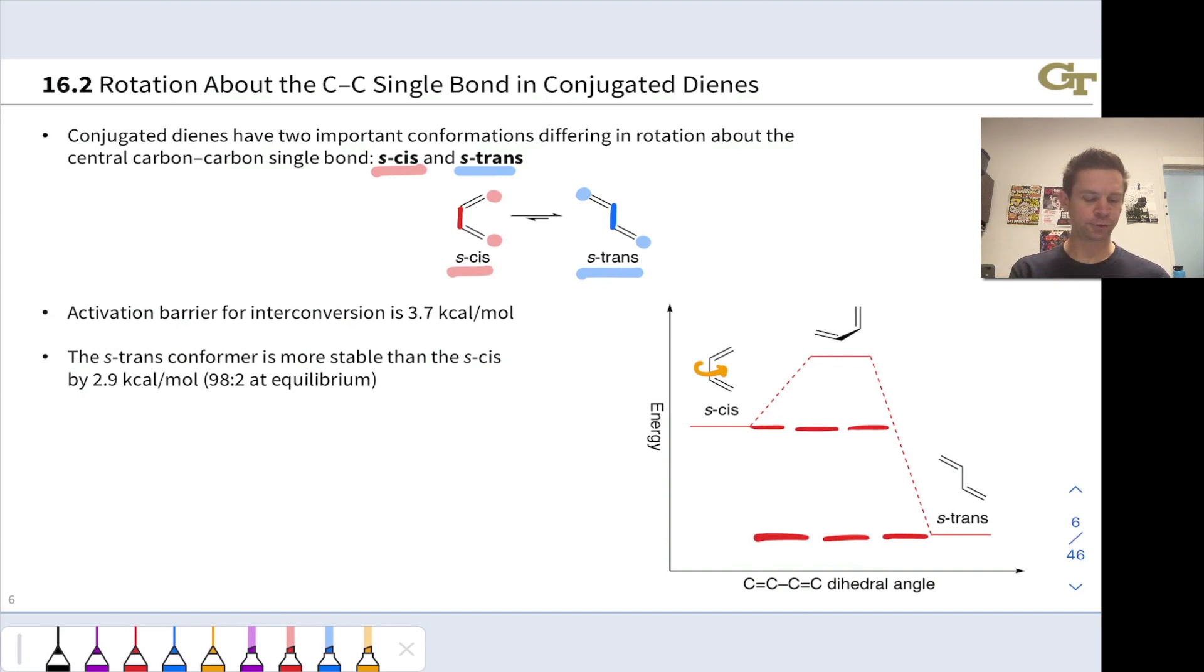If we measure that, it comes out to 2.9 kilocalories per mole. If we do the math on free energy and equilibrium constants, that's a ratio of about 98 to 2 at equilibrium—98% S-trans conformer and 2% S-cis.